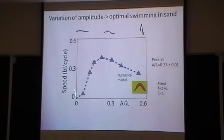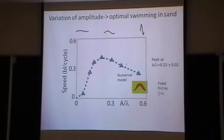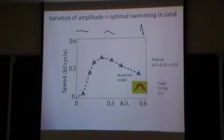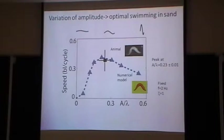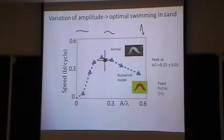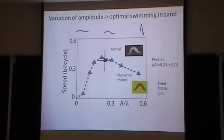We can then vary amplitude in simulation — from very low amplitude undulation to larger values — and measure speed in body lengths advanced per cycle. There is a maximum, and this is where the animal sits. Whether it sits there because it wants to go fast is a hypothesis. There's also a question about the difference between loose and closely packed states, which I'll get to at the end of the talk — I think it's a potentially very interesting story.